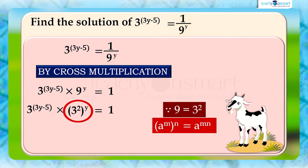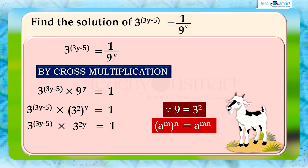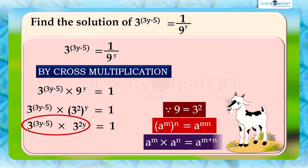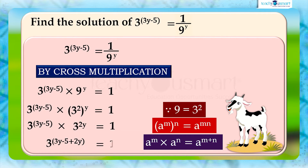We have the law a raised to m, the whole raised to n, equals a raised to mn. So that gives us 3 raised to (3y minus 5) multiplied by 3 raised to 2y equals 1. Then by the law a raised to m multiplied by a raised to n equals a raised to (m plus n), we can write 3 raised to (3y minus 5 plus 2y) equals 1.